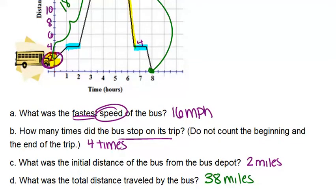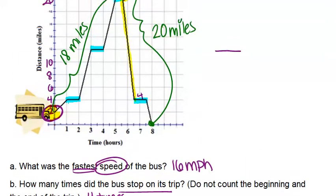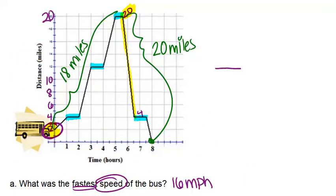So hopefully this example helped you to see how to analyze broken line graphs, specifically distance-time graphs, as far as figuring out distance traveled and speed and what it looks like when you've stopped.